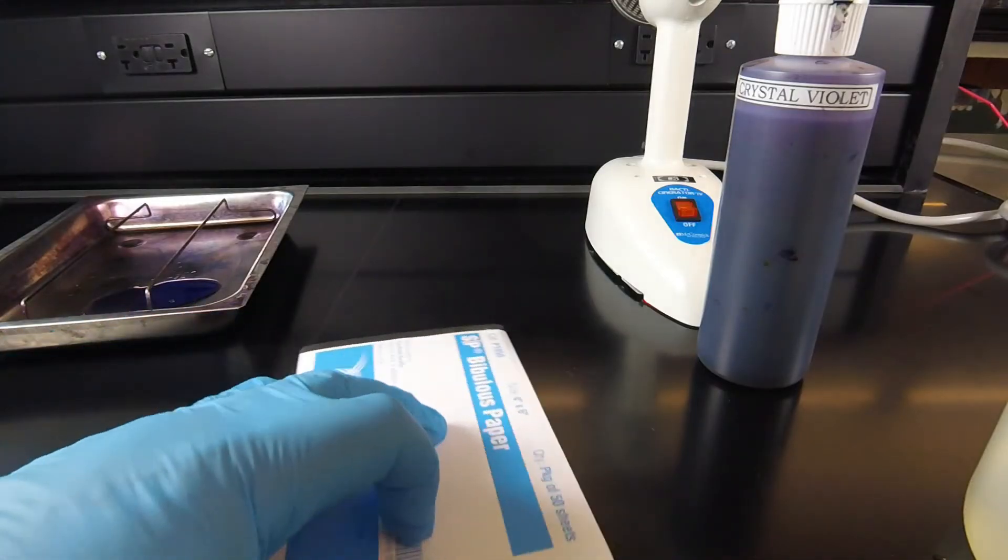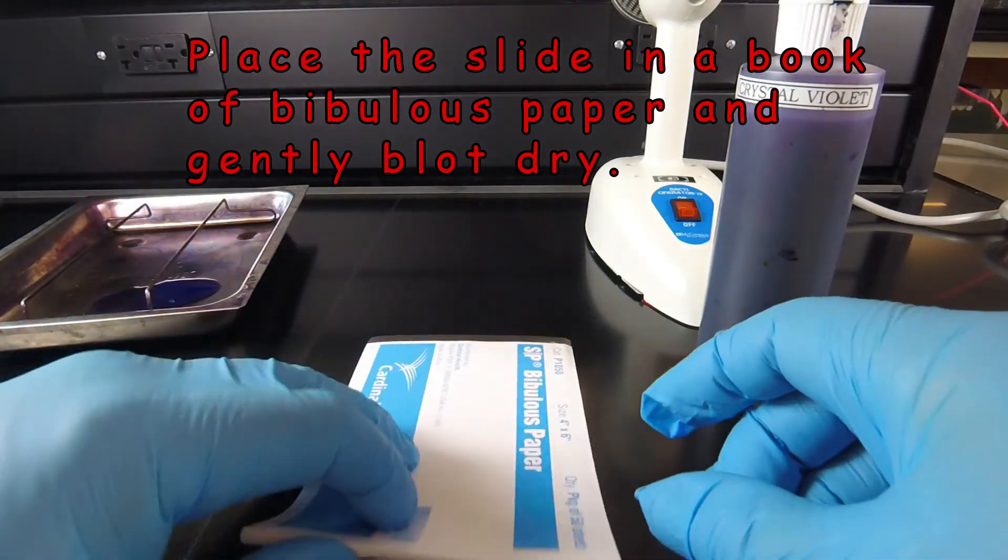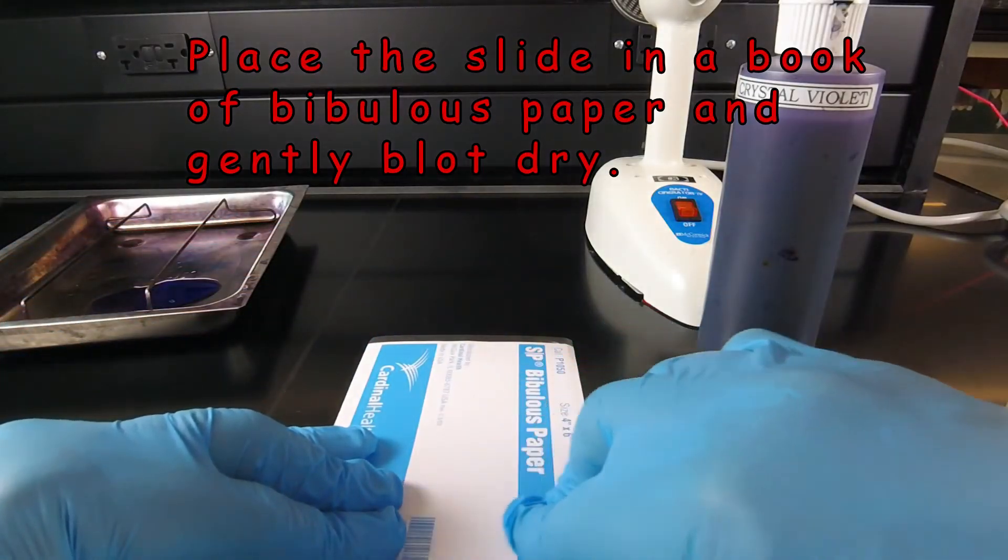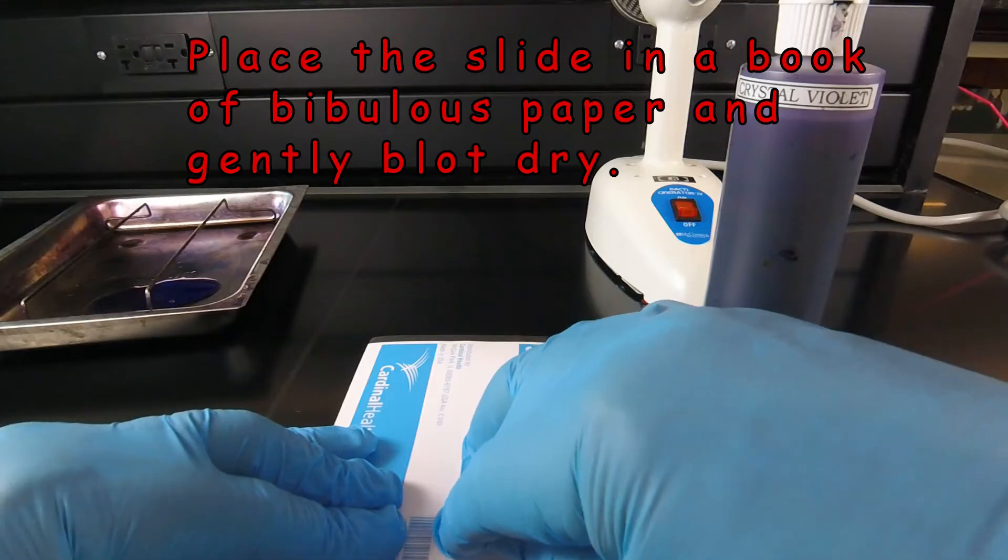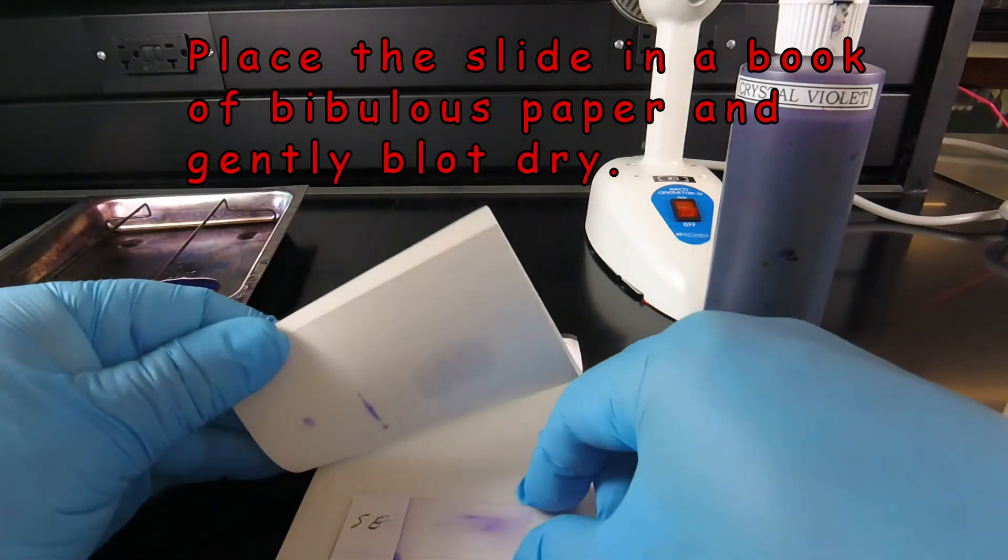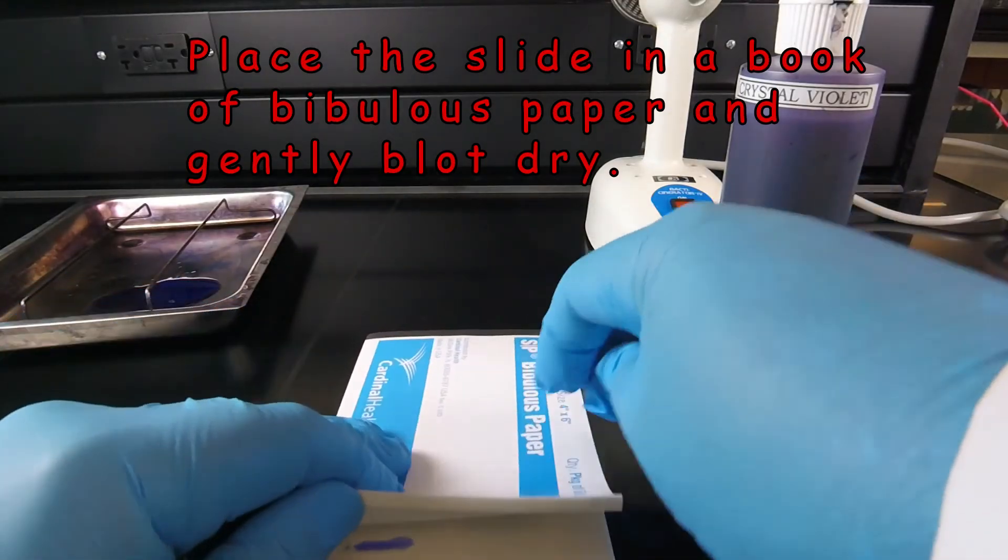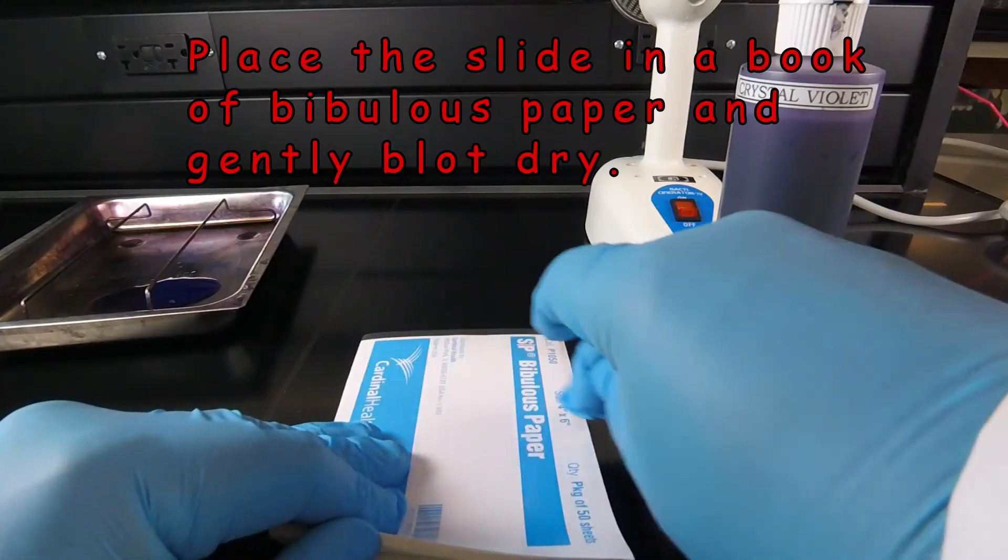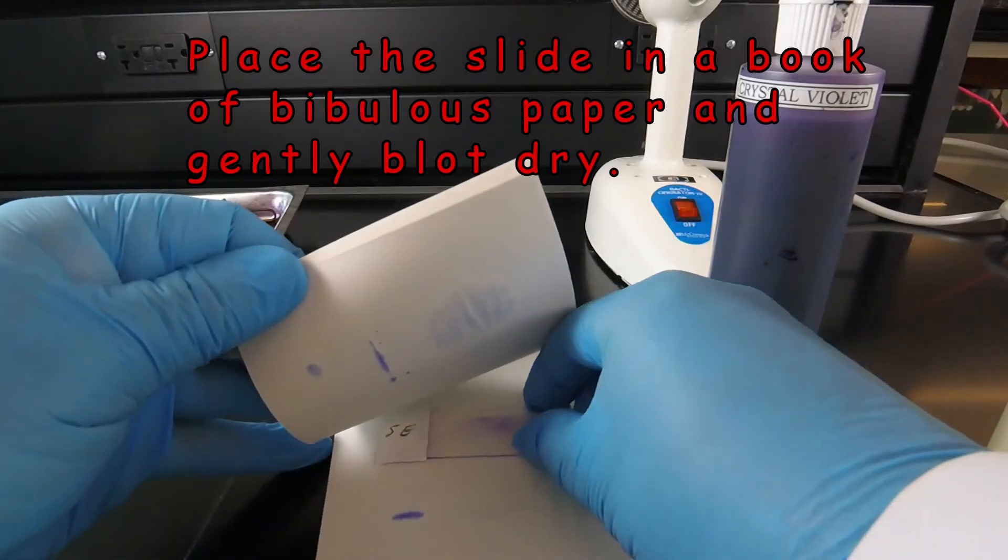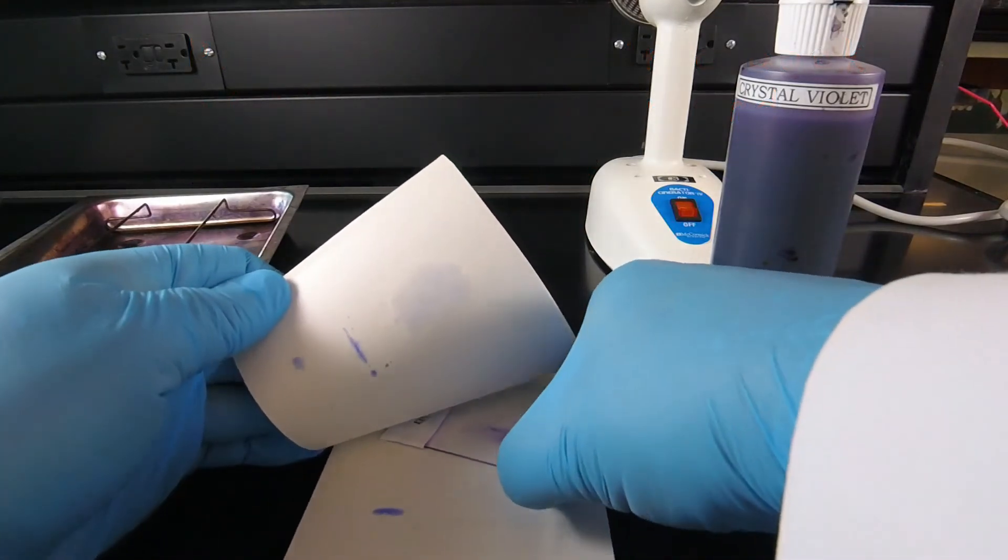For the blotting procedure, we take our slide and set it somewhere in the book. We gently rub the slide, being careful not to push too hard because that can break the glass slide. We're just gently rubbing to blot off the water. We're going to move the slide around several times in the book until we've blotted off all the water.